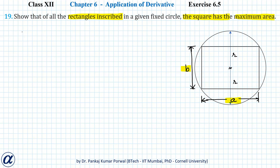Let's write the area of this rectangle as A into B, that is length into breadth. Now, there seem to be two variables in the area of this rectangle, but we can eliminate one of them using the properties of the circle.